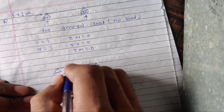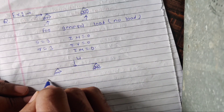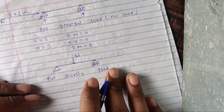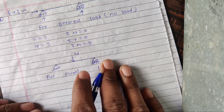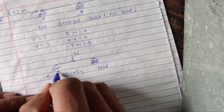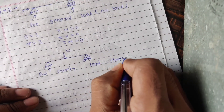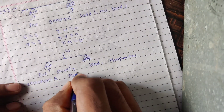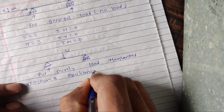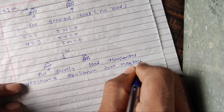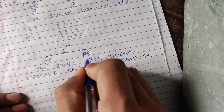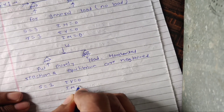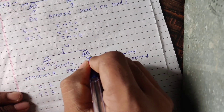Now take the same diagram of a beam and put load W on it. For purely vertical loading, horizontal reaction and horizontal equilibrium are neglected. Therefore only two reactions remain — vertical and moment — so S = 2 and R = 2.